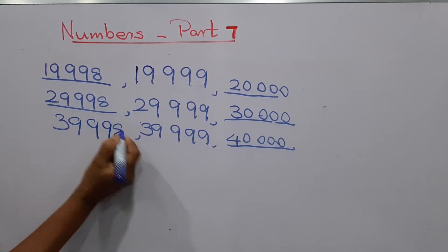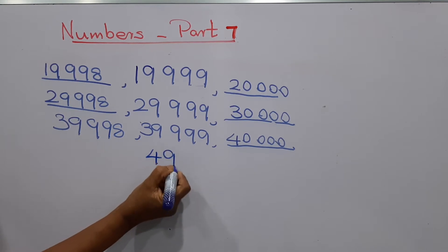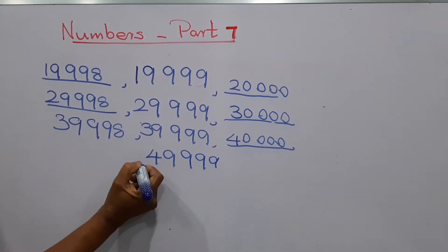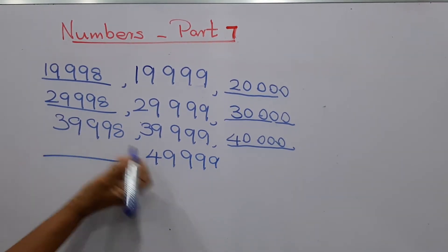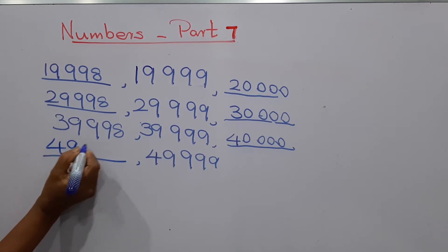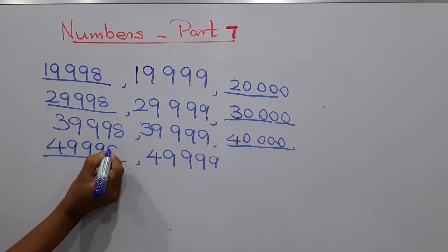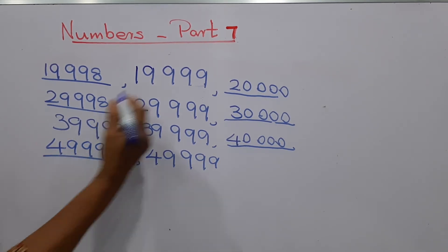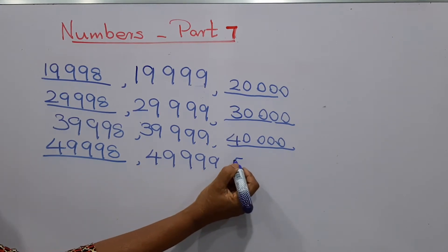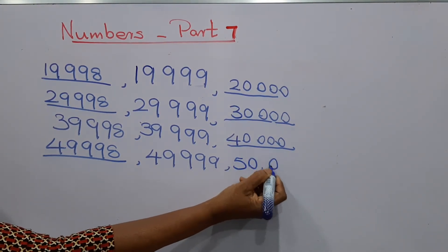Then the next number is 49,999. What is the number before 49,999? And what is the number after? 50,000.